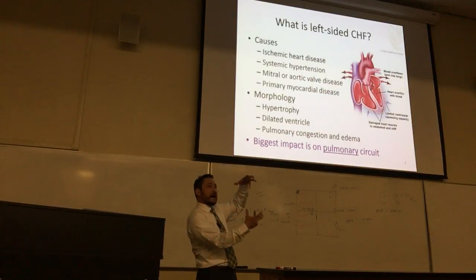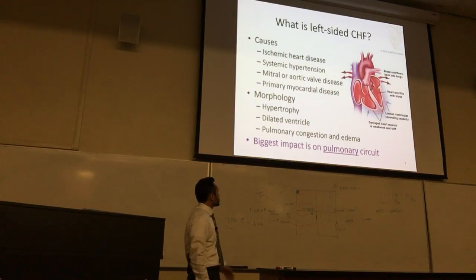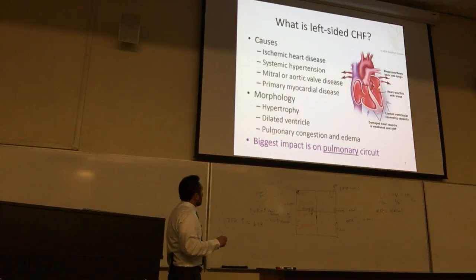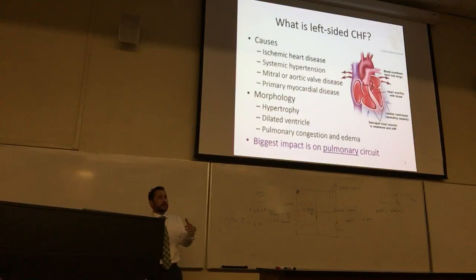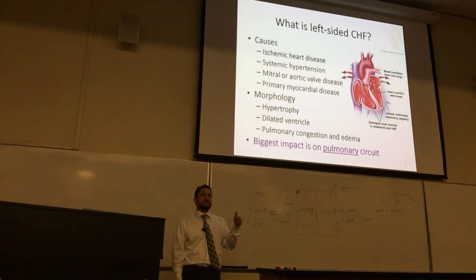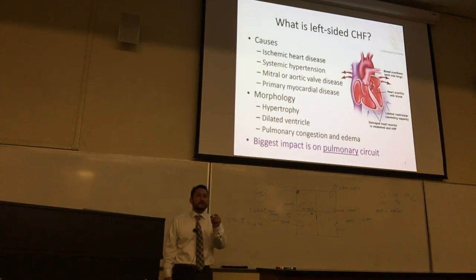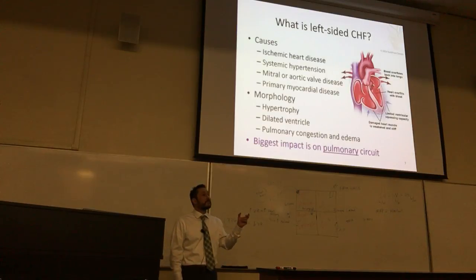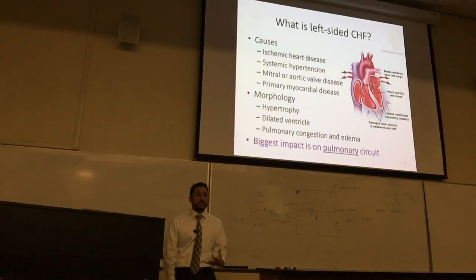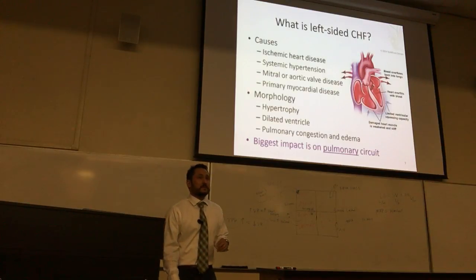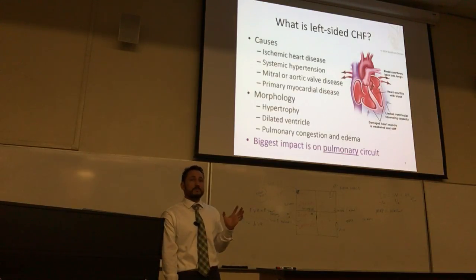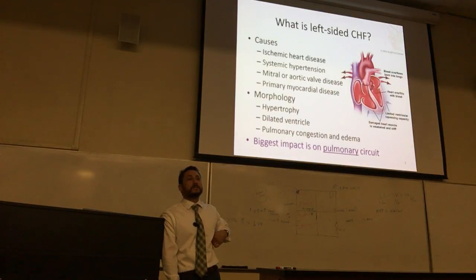This is where we end up: pulmonary congestion and edema. We go from 100 milliliters of fluid in the pleural space to like a liter a day — it continues to build up. At a liter a day the patient is basically saying 'take me in and give me treatment.' Many get a pleural port put in to drain it at home for convenience.